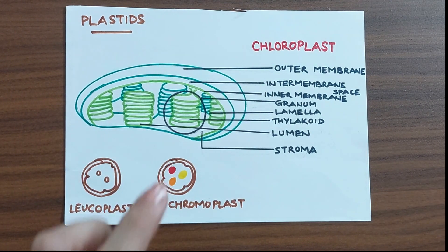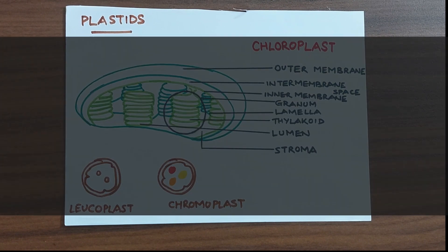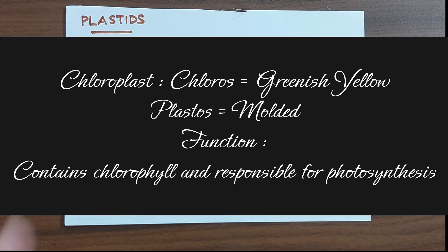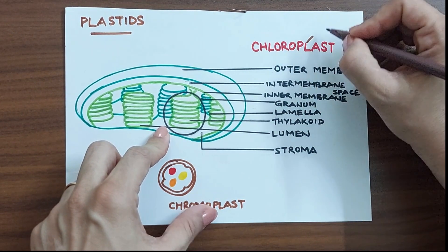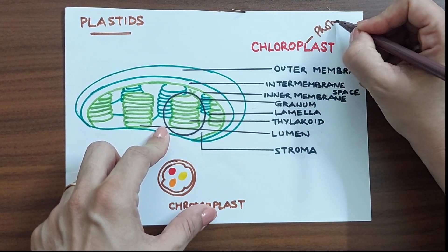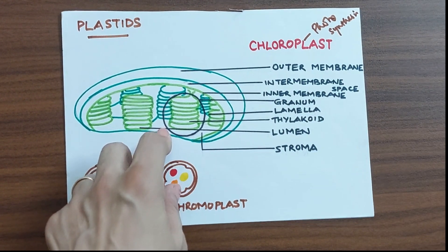The third one is the chloroplasts. These are again very special because chloroplasts are the most well-known types of plastids. They are responsible for photosynthesis and photosynthesis we know is a very important process which happens only in plants and it helps to convert sunlight into chemical energy. So it is the chloroplasts which helps in photosynthesis.